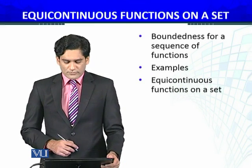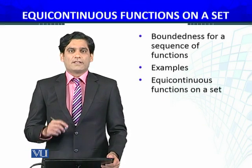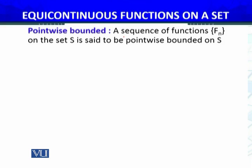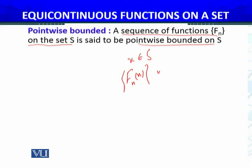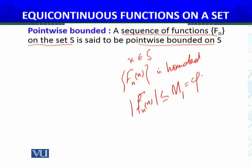Boundedness of a sequence of functions — a sequence of functions on a set is said to be point-wise bounded on S. Just as we had point-wise convergence defined, for each x belonging to S, you have f_n(x), and for each x this sequence is bounded. Now, this is bounded means we must have |f_n(x)| ≤ M₁ for some M₁. I define this bound by a function phi of x. Since the sequence of functions is bounded, and if we vary x, then we must have the same structure, so that sequence of functions should be bounded.